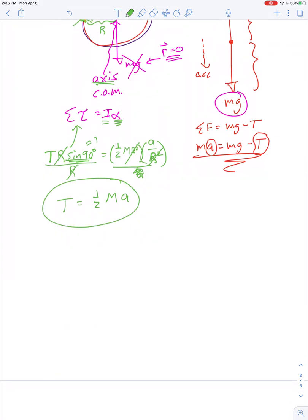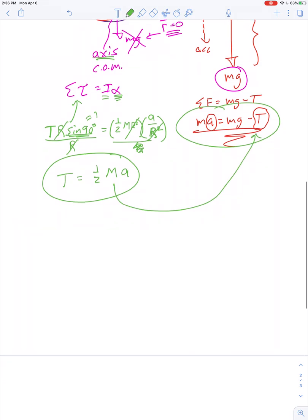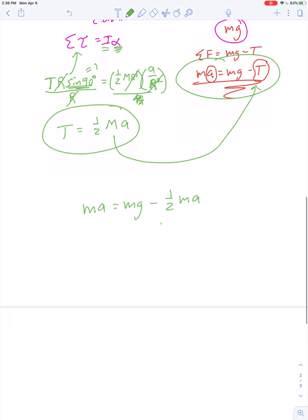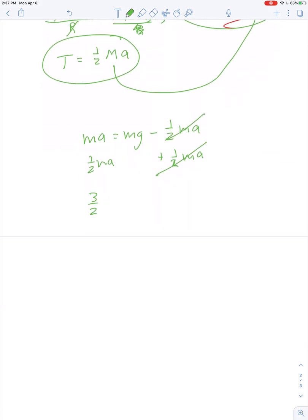Now I have two equations for my two unknowns, and I'm just going to make a substitution. So M A is equal to M G minus 1 half M A. I'll add 1 half M A to both sides of the equation, and I get 3 halves M A is equal to M G. I'll cancel out the M, and A is then equal to 2 thirds of G.